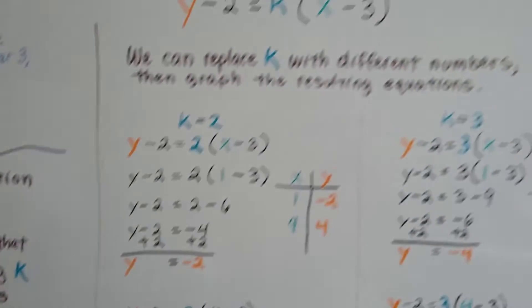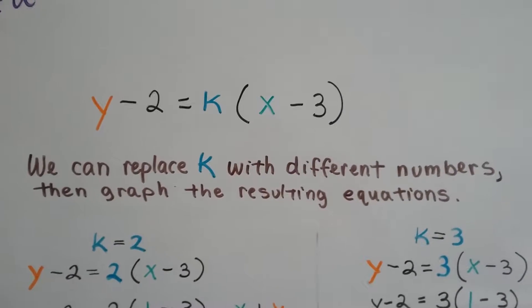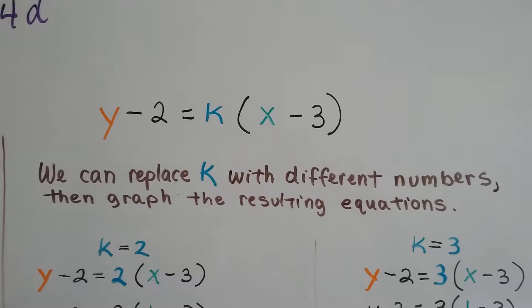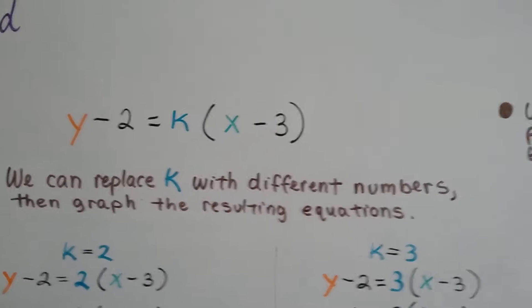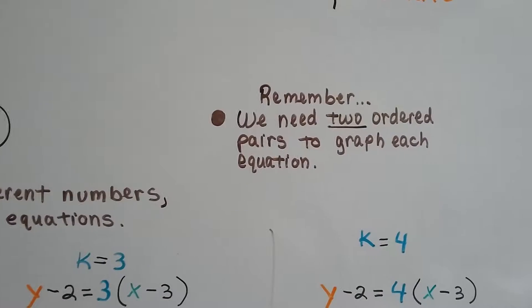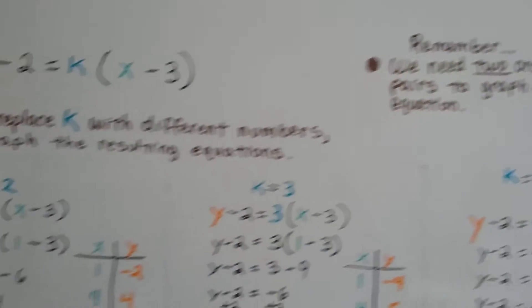Here's our linear equation and we can replace k with different numbers and then graph the resulting equations. We can set k to equal 2, 3, 4, or 5 and that's what we're going to do. But remember, we need two ordered pairs to graph each equation. So we have to do a little math here.